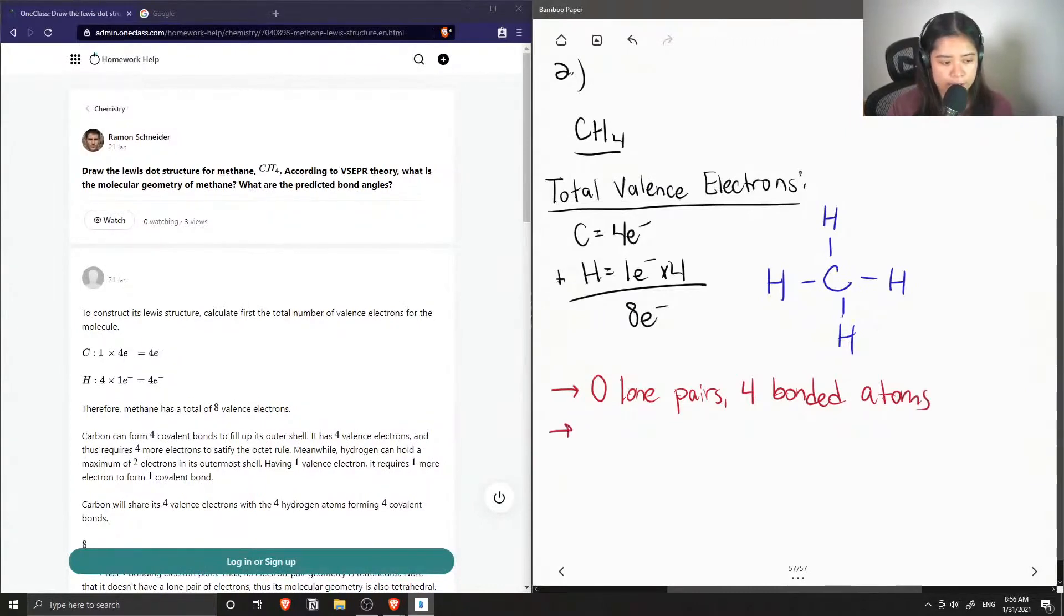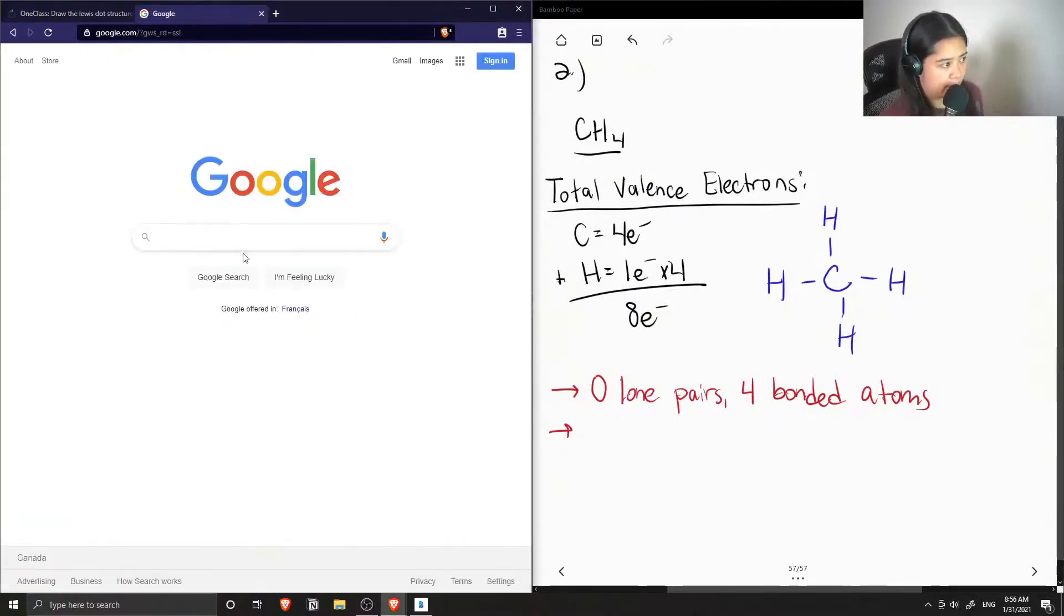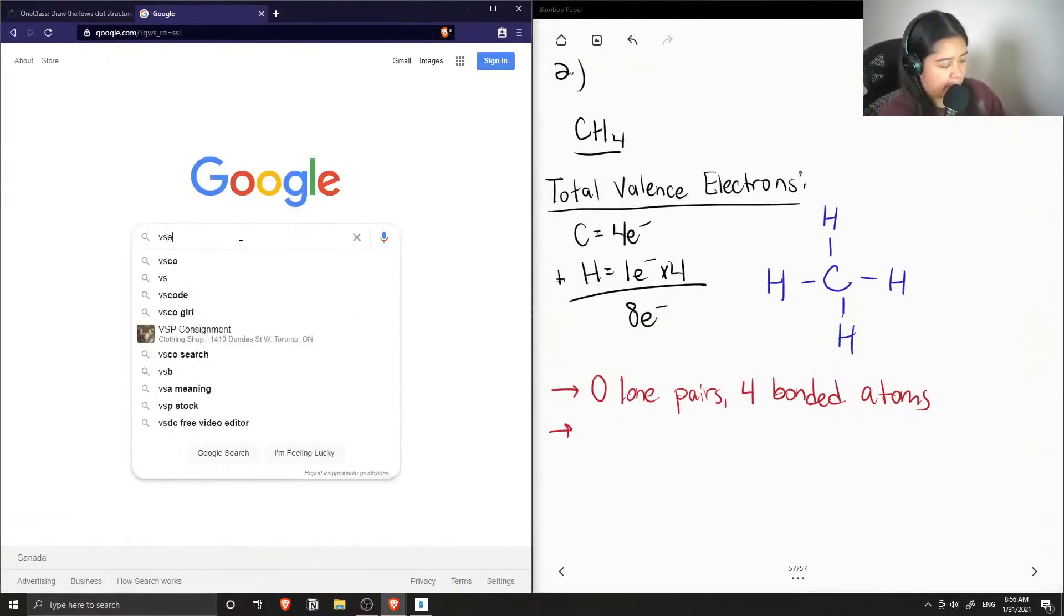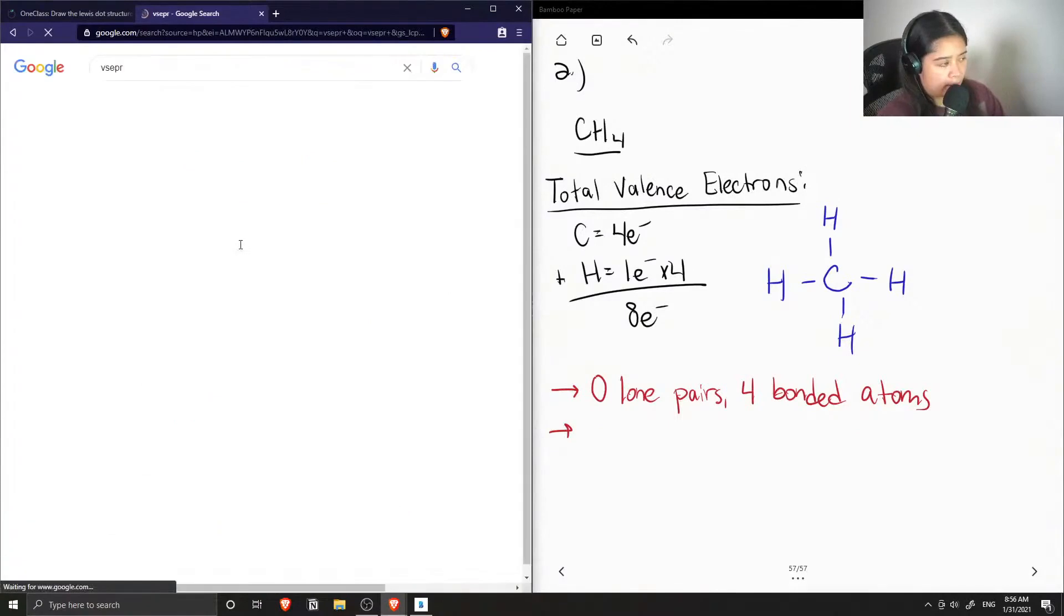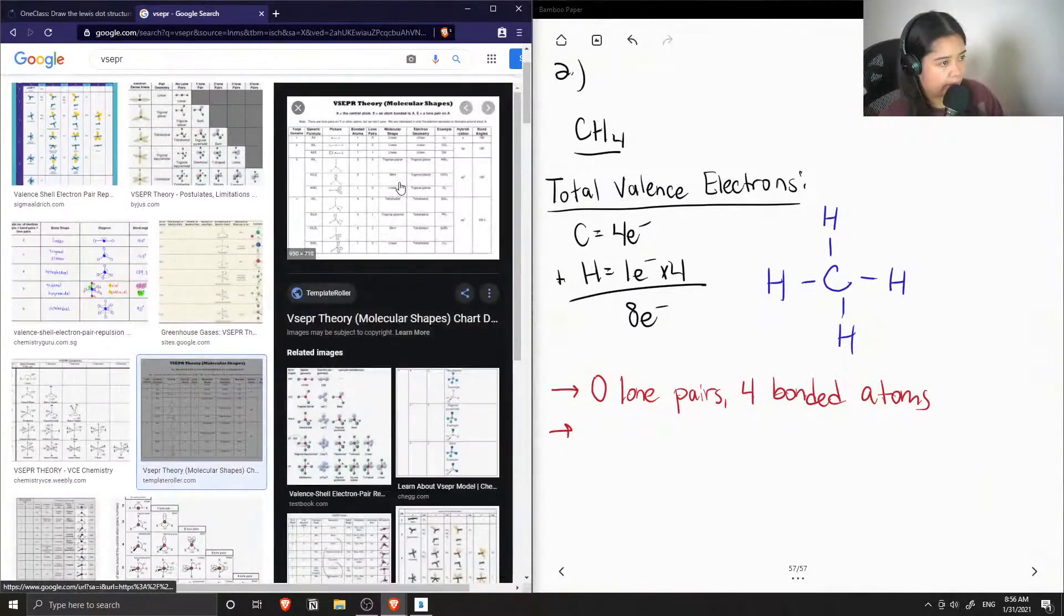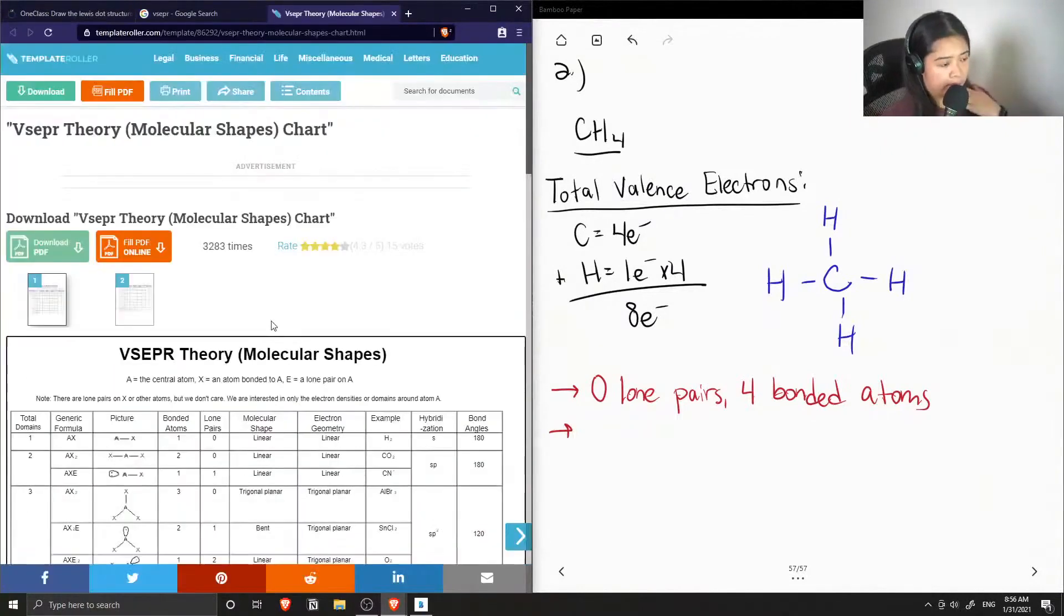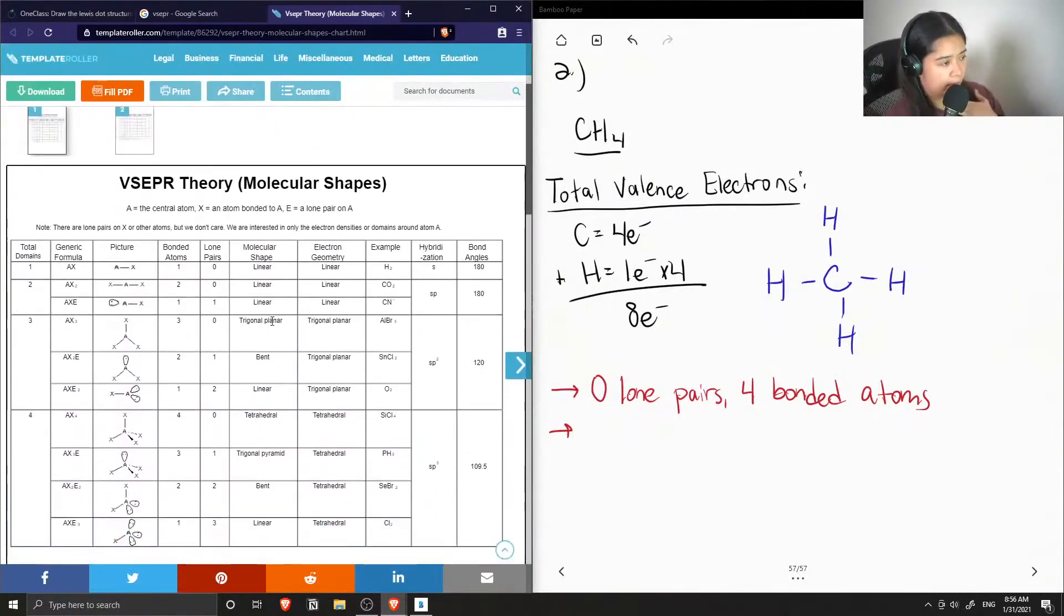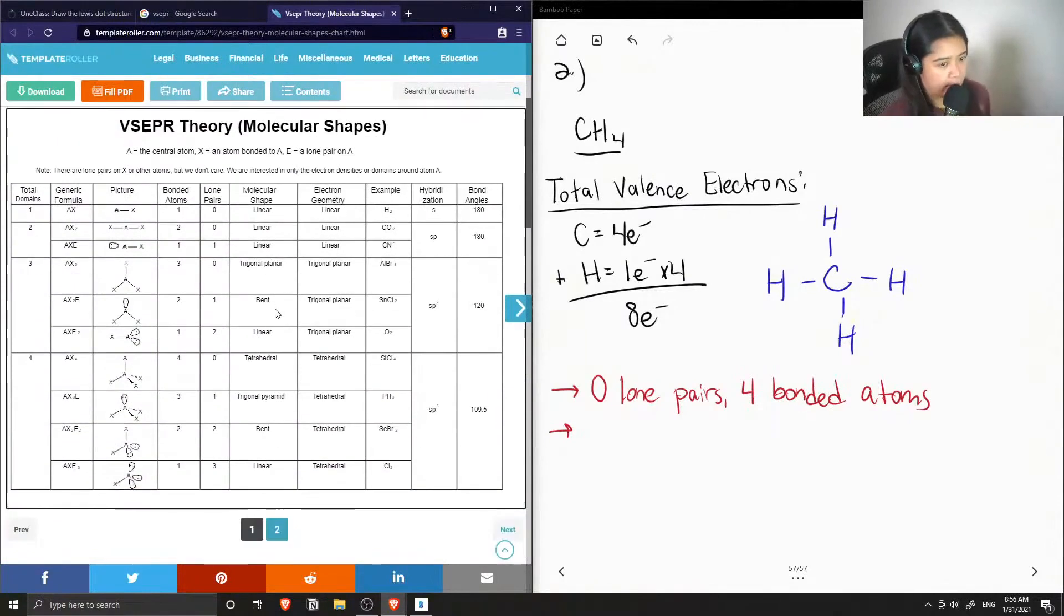We can use a VSEPR theory chart to see the type of shape, bond angles, and other properties of the carbon.